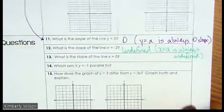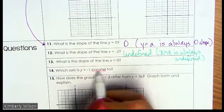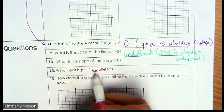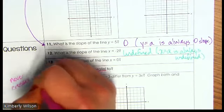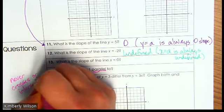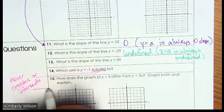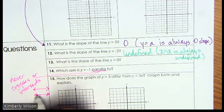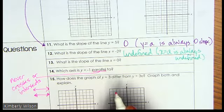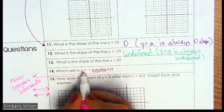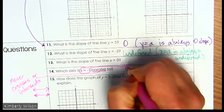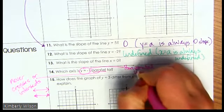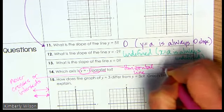Jumping down to 14 — which axis is y equals negative 1 parallel to? Parallel means it never intersects, never crosses. If it's y equals, that means it would be a horizontal line. So which axis goes across? The axis that's horizontal is the x-axis. So y equals negative 1 is parallel to the x-axis.